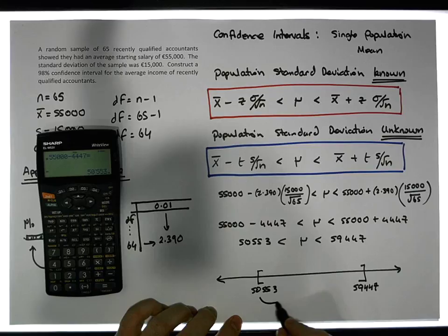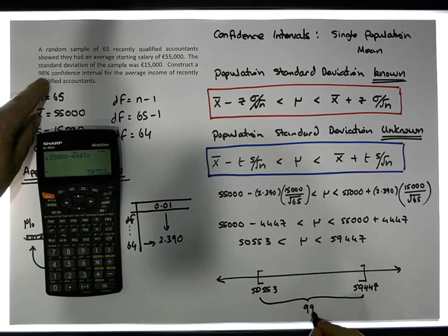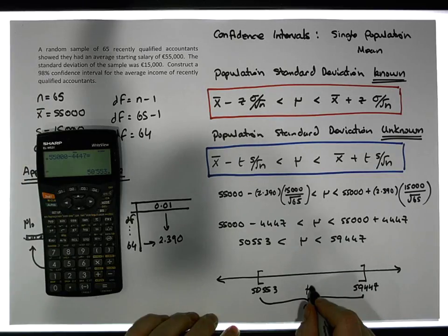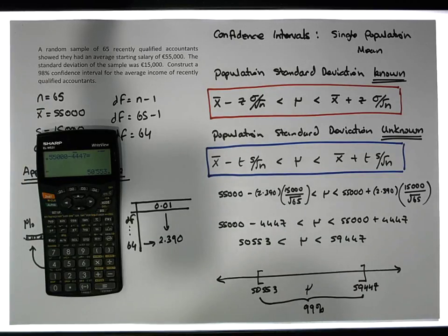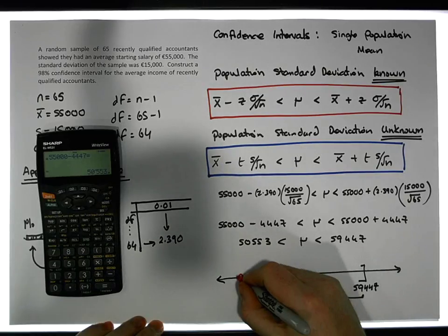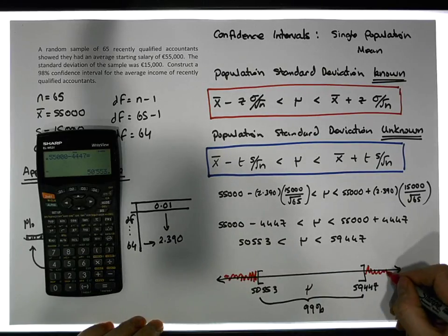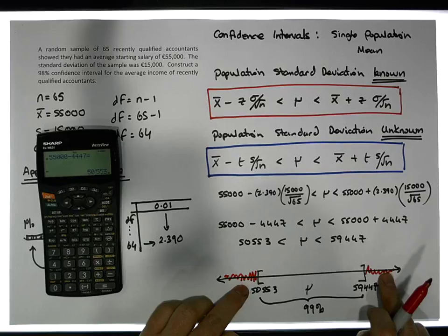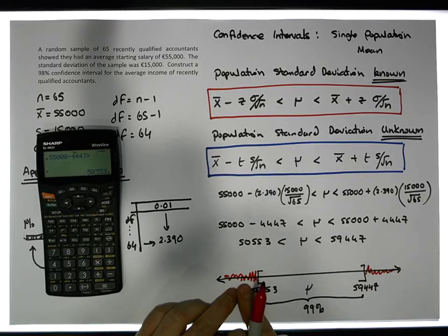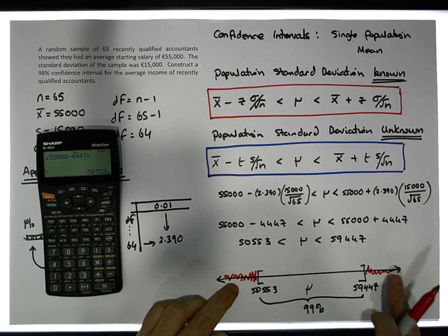We know that the true population mean—we should find it between those values 98 percent of the time. It might not be in there; it might be outside of them. It could be over here or over here, but it should only be in these particular positions one percent of the time.